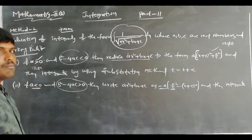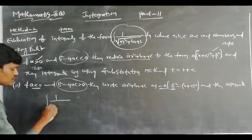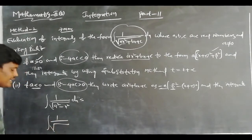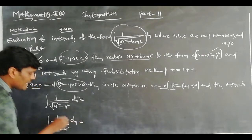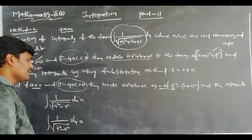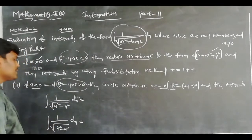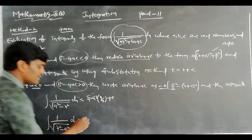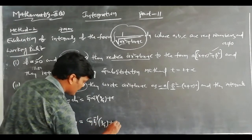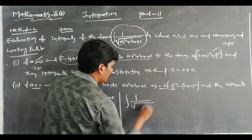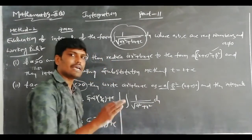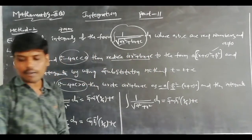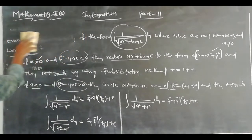To solve Method 2 problems, use three formulas. First: ∫1/√(x² - a²) dx. Second: ∫1/√(a² - x²) dx = sin⁻¹(x/a) + c. Third: ∫1/√(x² + a²) dx using substitution gives cosh⁻¹(x/a) + c or sinh⁻¹(x/a) + c. These three formulas are used for solving Method 2 integration.